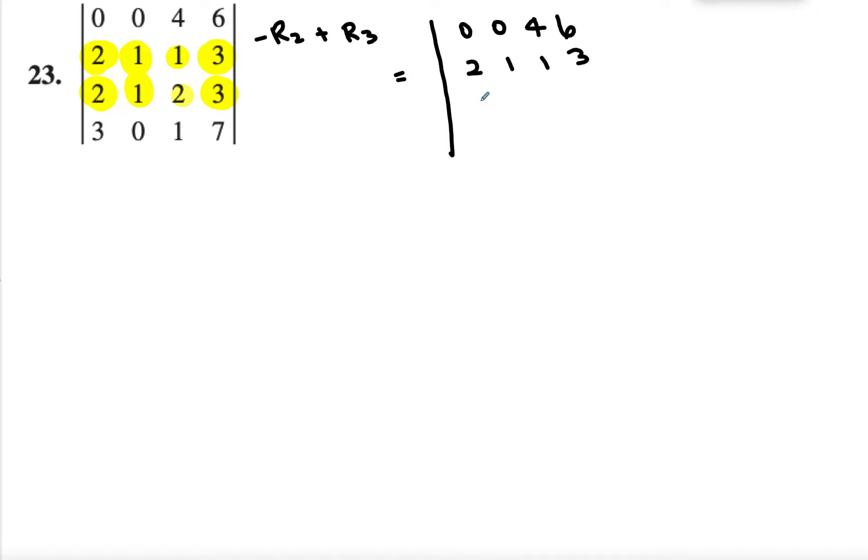And then I'm going to have 0, 0, 1, and then 0. And we have 3, 0, 1, 7.